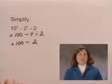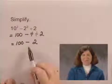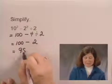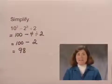The last step would be to perform additions and subtractions in order from left to right. There is one subtraction. Performing it, I have 100 minus 2 is 98. So, the simplified form of the expression is 98.